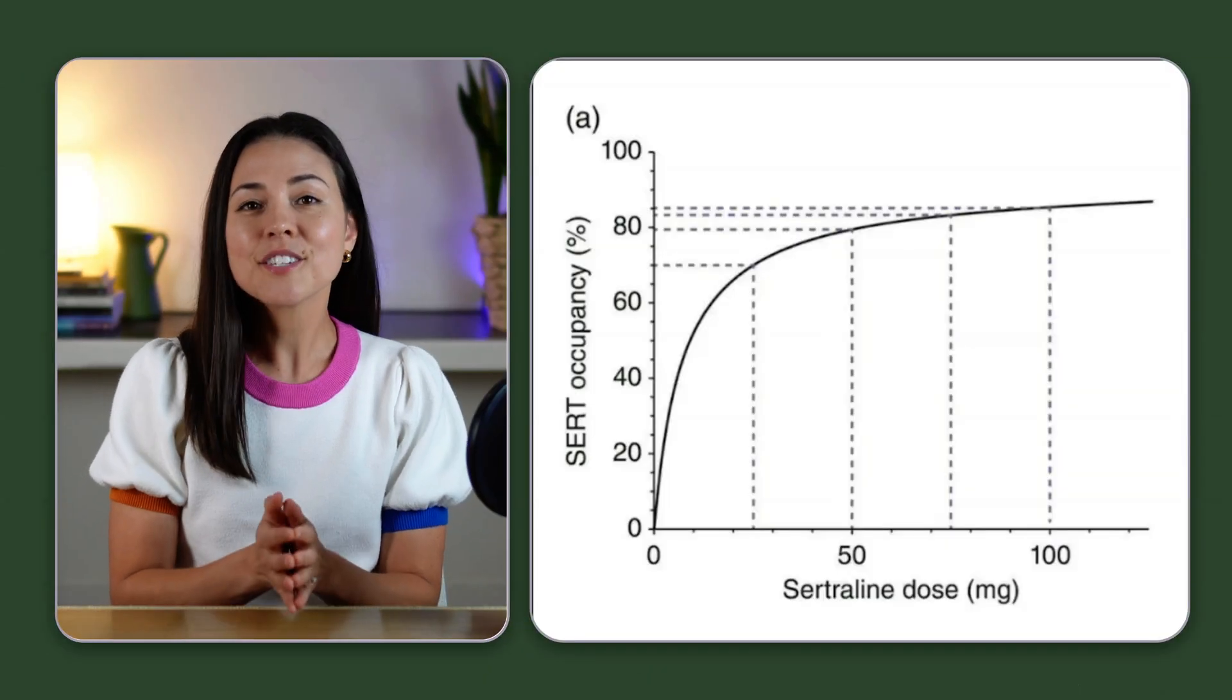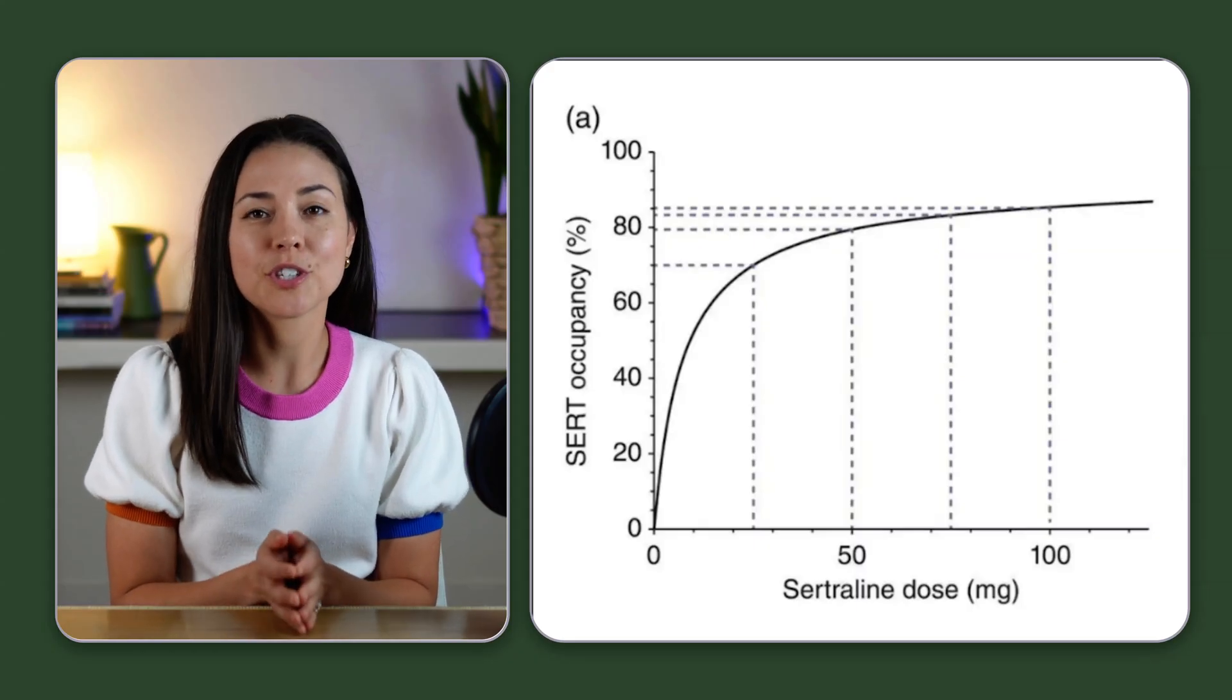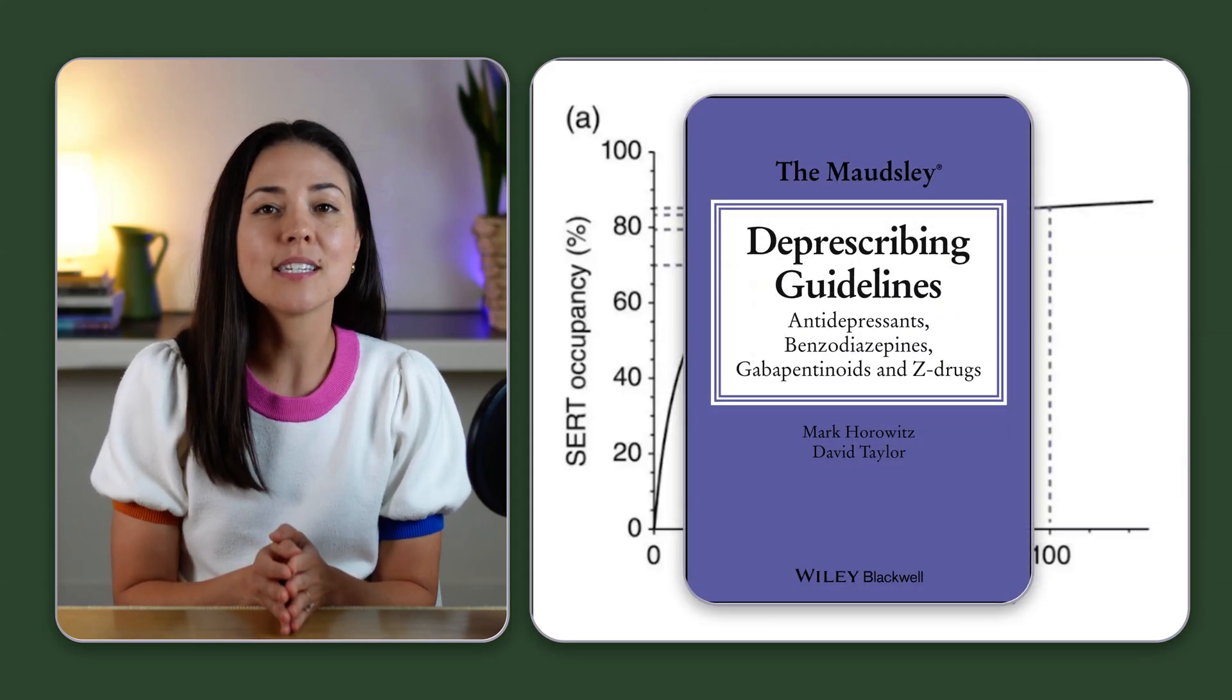The graph that relates the amount of medication taken to the percentage of serotonin transporters occupied is called the SERT occupancy curve. Here's the SERT occupancy curve for sertraline, or Zoloft, from the Maudsley Deprescribing textbook.